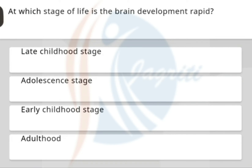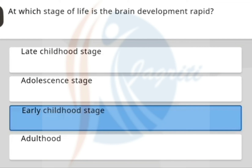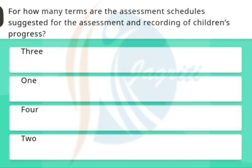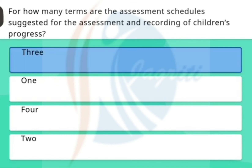At which stage of life is brain development rapid? The correct option is early childhood stage. For how many terms are the assessment materials suggested for the assessment and recording of children's progress? The correct option is 3.